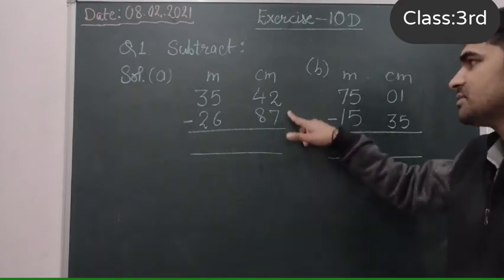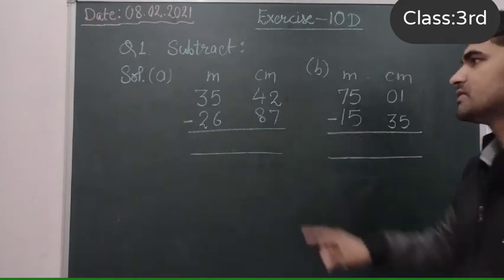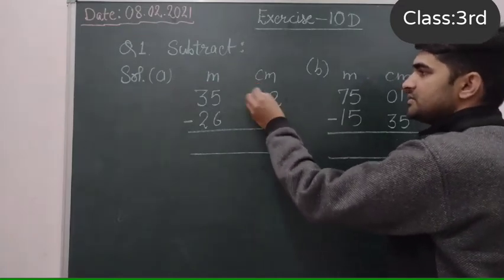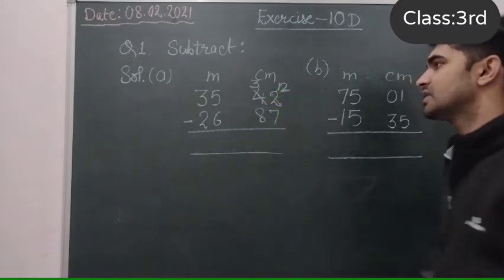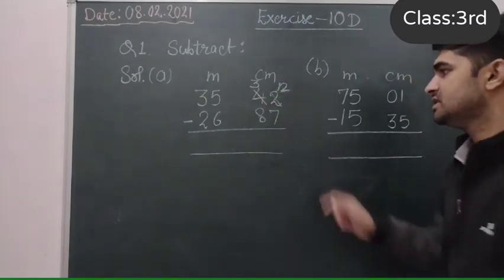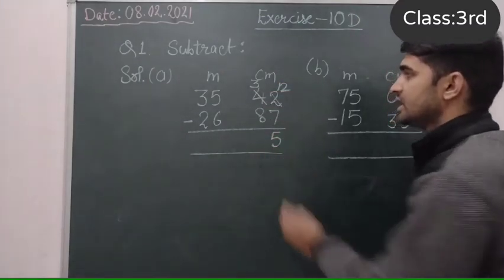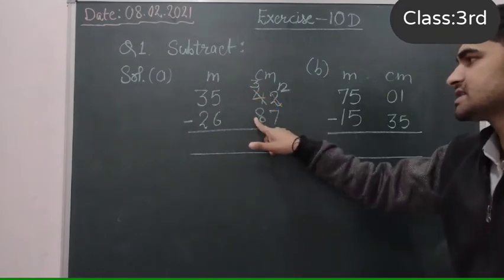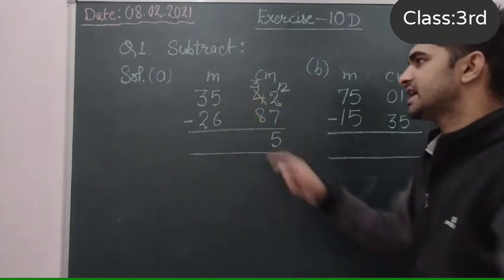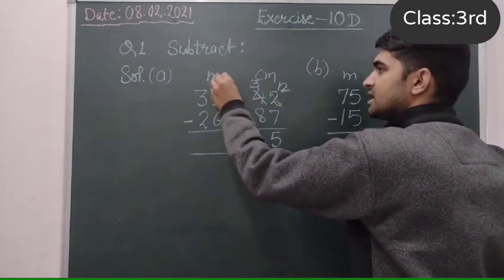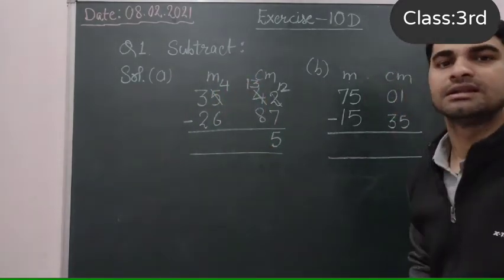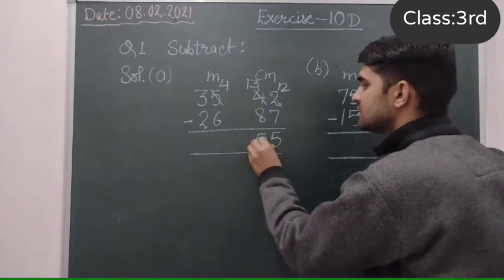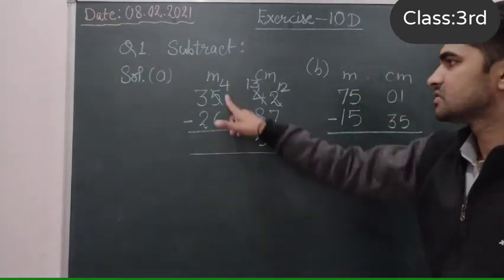We will start from here. So here is 2, we will take carry from here, it becomes 3, and it becomes 12. 12 minus 7 is 5. And here 3 is less than 8, so we will take carry from here. It becomes 4 and it becomes 13, and 13 minus 8, again 5.